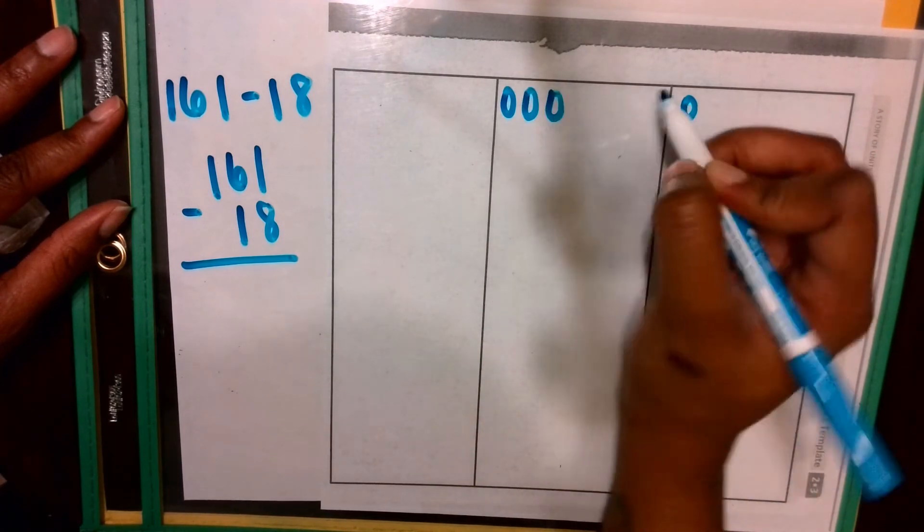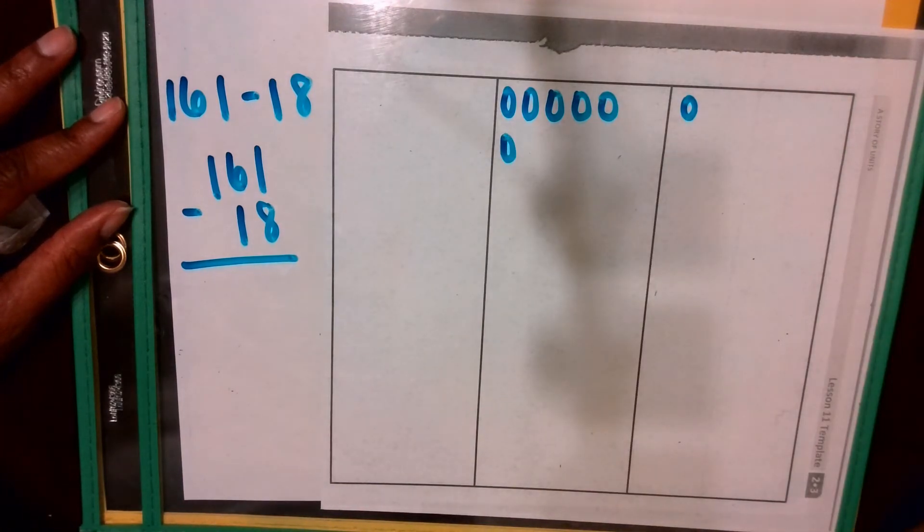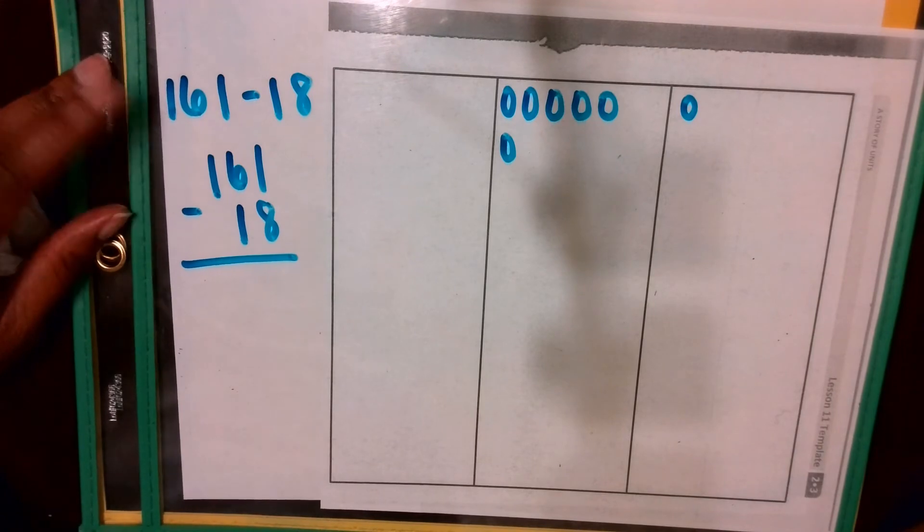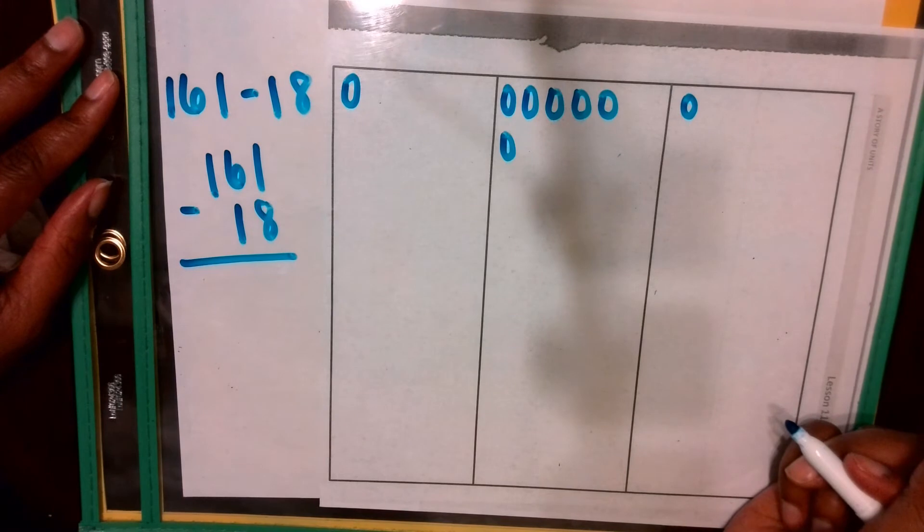1 ten, 2 tens, 3 tens, 4 tens, 5 tens, 6 tens. And how many hundreds are in 161? 100, good job.